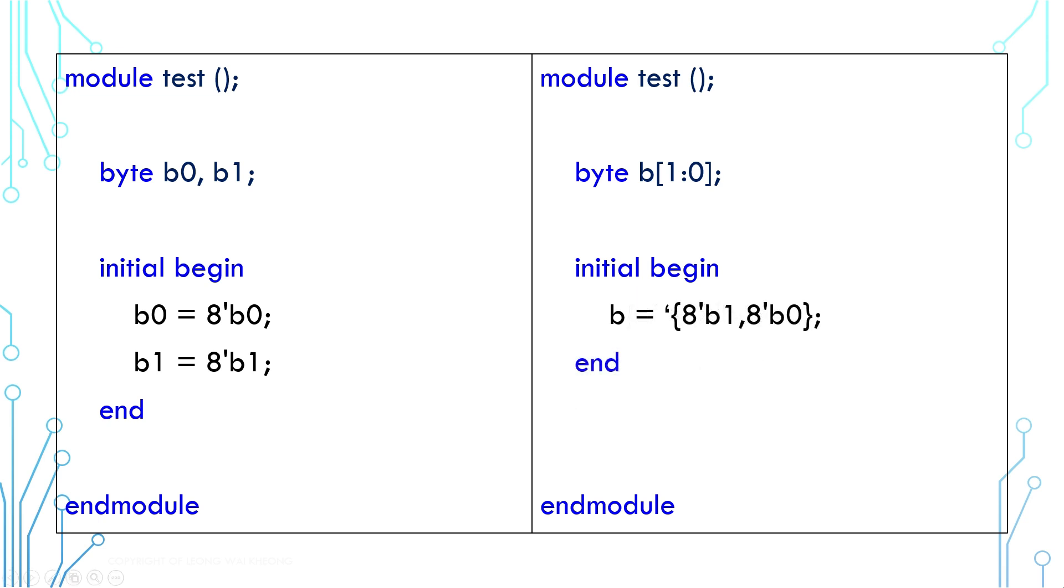We can provide an array value to an array variable straight away without having to modify its element one by one. Array value is indicated by an apostrophe and a pair of curly braces. The example on the right achieves the same effect as the example on the left.